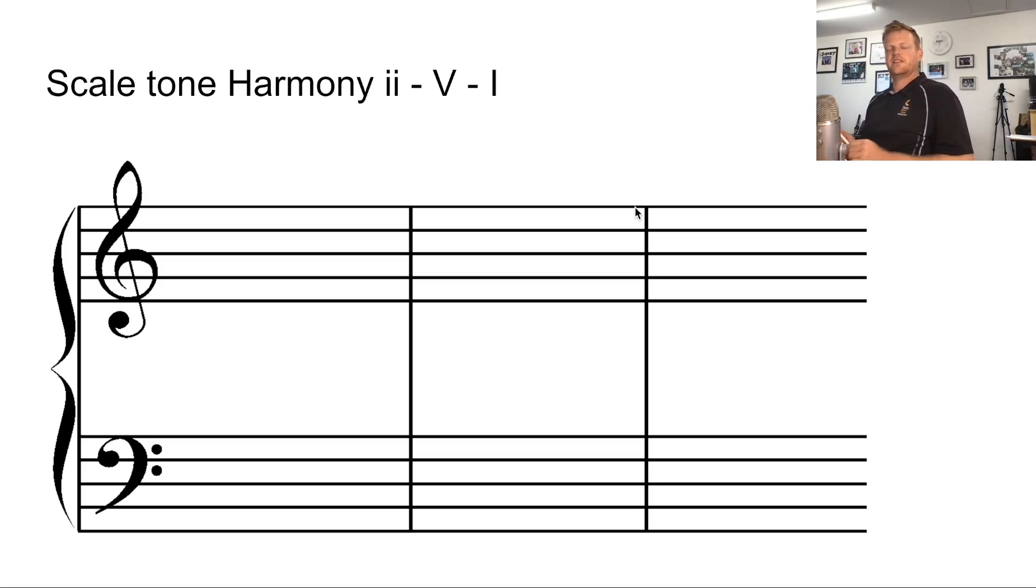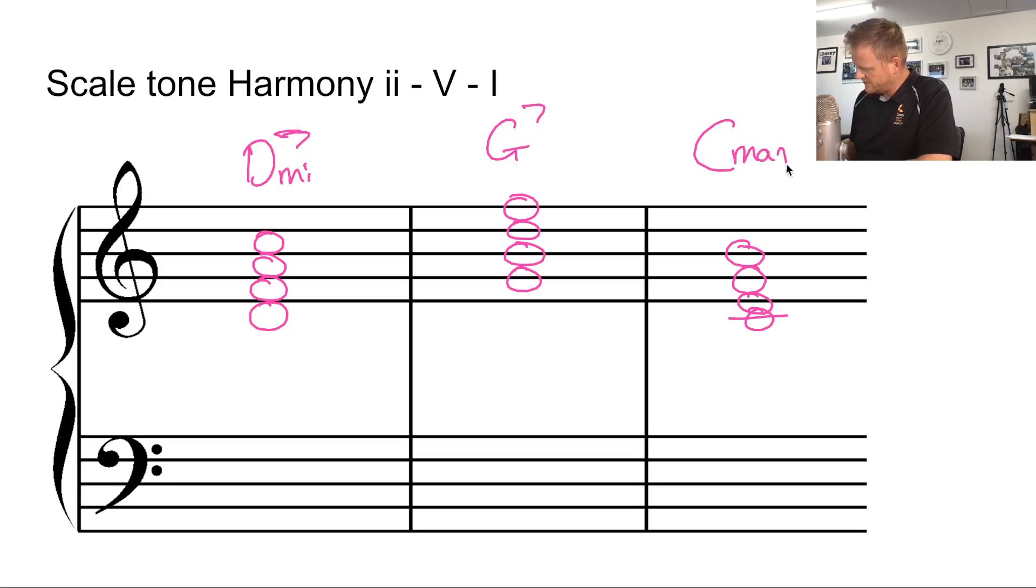A 2-5-1 is a fairly common progression in most music, but particularly in jazz where it's used most often. The second would be of C major, then the fifth and the first. So this would be D minor 7, G7, C major 7. Then we might separate that out a little bit into some better voice leading, so we might put the bass note down here and then just have third and seventh.